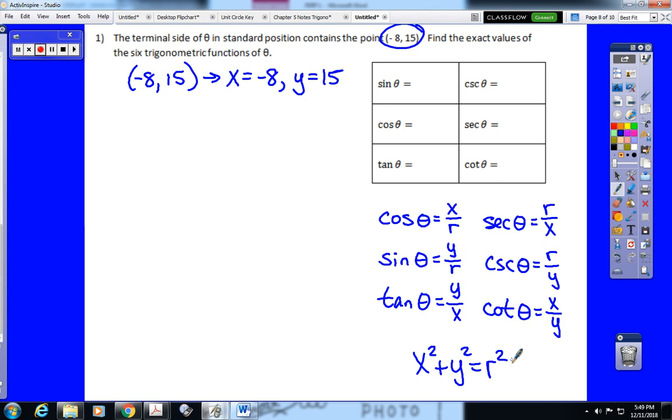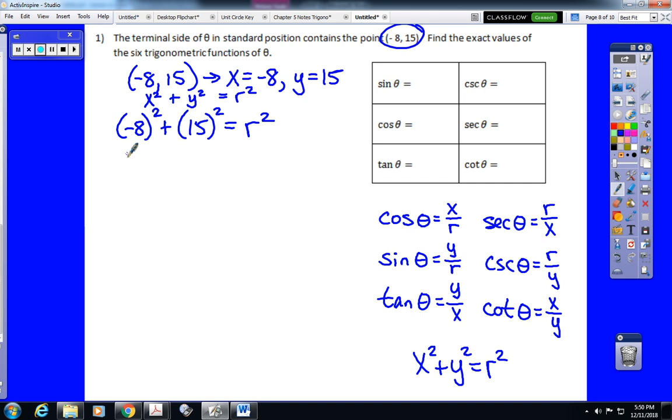x squared plus y squared equals r squared. So what we do is we plug in x squared and y squared into that equation to find r squared. Because x squared plus y squared equals r squared. Negative 8 squared is 64. 15 squared is 225. We add those together. That is 289 for r squared.